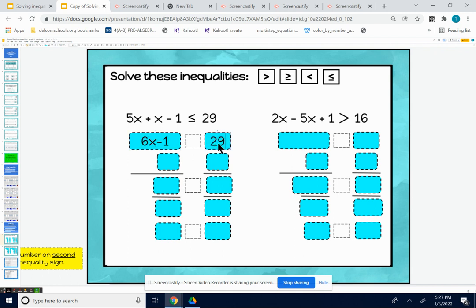We have 6x minus 1 less than or equal to 29. And we don't worry about changing the inequality symbol until the very end.